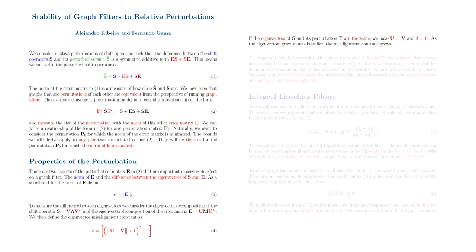If the eigenvectors of S and its perturbation E are the same, we have that U equals V and that, consequently, delta equals 0. As the eigenvectors grow more dissimilar, the misalignment constant grows.